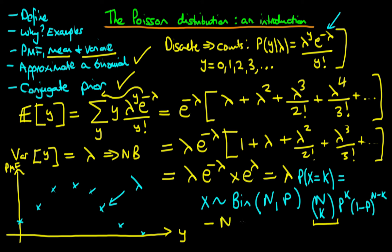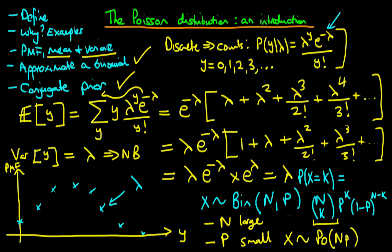Those criteria are that n is a large number — the total number of trials is large — and that the probability of success p is itself a very small number. In those circumstances, we can approximate x by a Poisson distribution with lambda equal to n times p. I won't provide a proof as it is quite involved, but I want to graphically show that the Poisson distribution provides a very adequate approximation to the binomial when these criteria are satisfied.